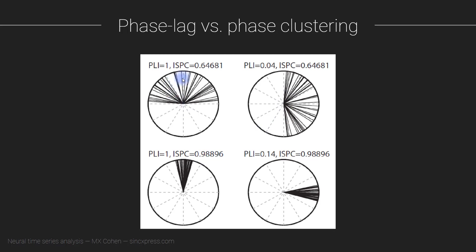For the other two distributions, both have a PLI of exactly 1, even though the clustering is quite different. This clearly demonstrates the dissociation between PLI and phase clustering.